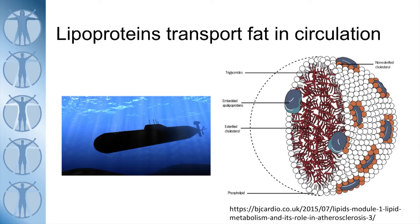To get around this, we have these magnificent structures called lipoproteins. You need to think about them like submarines, where they carry their fat cargo around our circulation. You can see in the picture here that we've got an inside cargo carrying fat, cholesterol, triglycerides, vitamins, antioxidants, and several other things. We've also got a very complex outer membrane with several proteins embedded within it. I want you to take note of those embedded proteins because we're going to come back to that — they are what we call the signalling molecules.